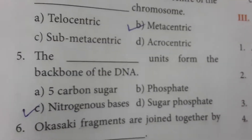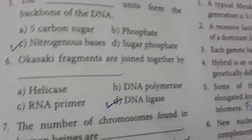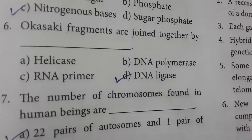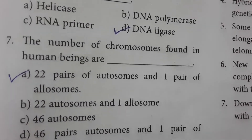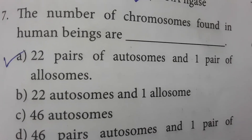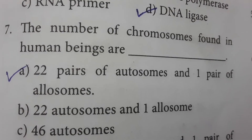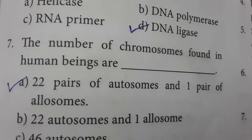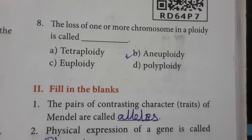The unit that forms the backbone of DNA is the nitrogenous bases. Okazaki fragments are joined together by DNA ligase. The number of chromosomes found in human beings is 23 pairs — that means 22 pairs of autosomes and one pair of allosomes. Autosomes are body chromosomes, while allosomes are sex chromosomes. The loss of one or more chromosomes in a ploidy is called aneuploidy.